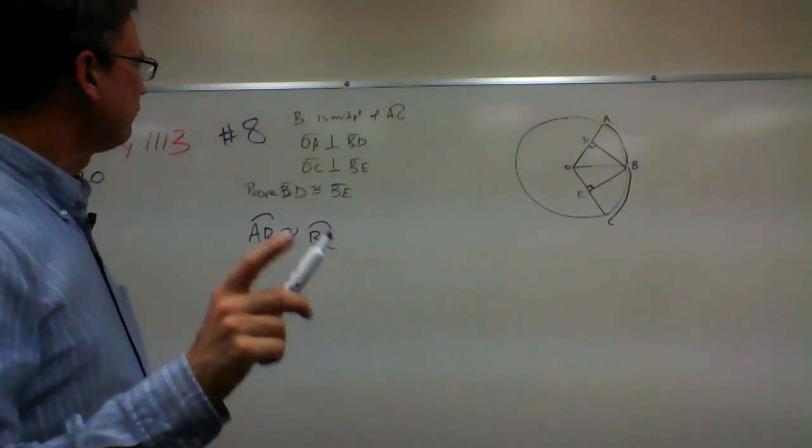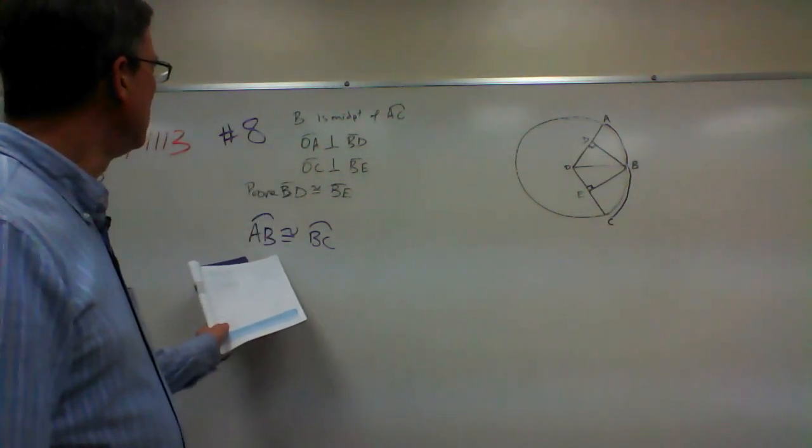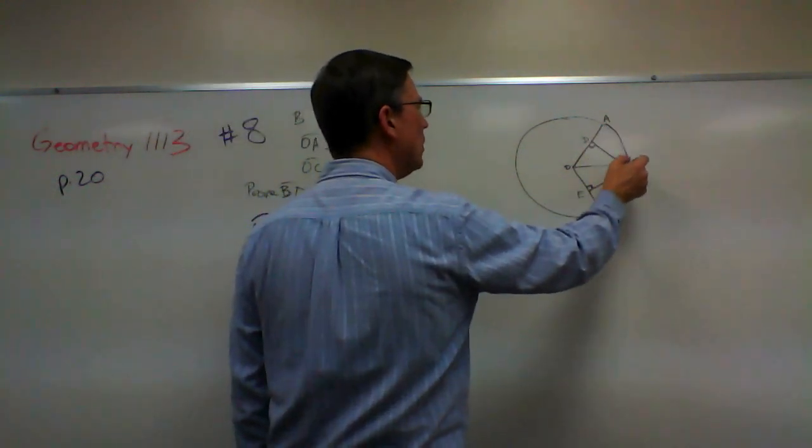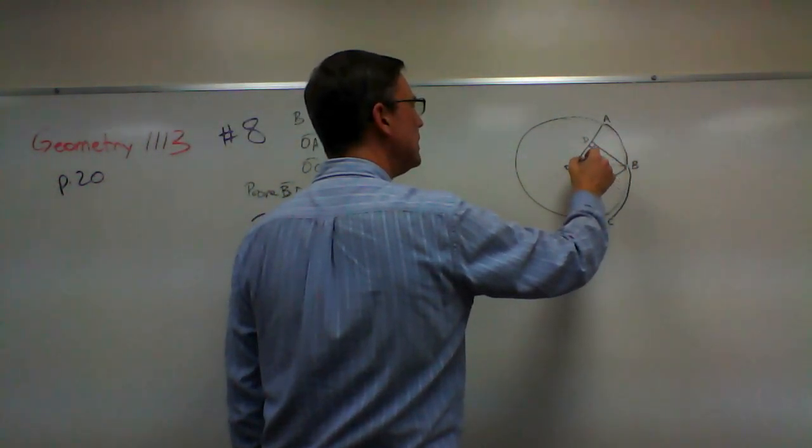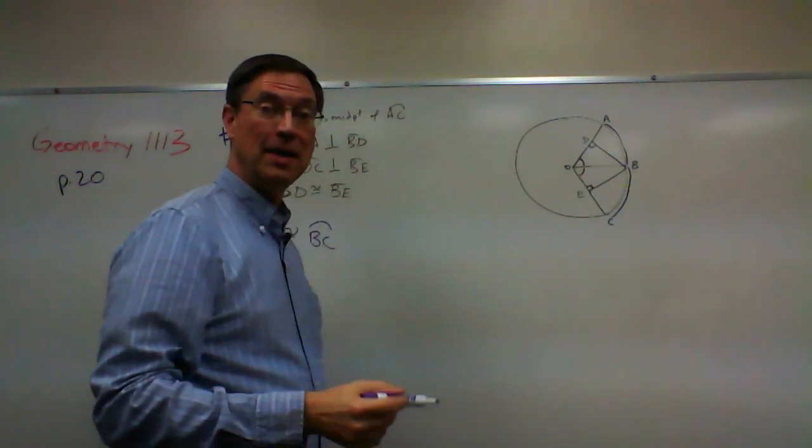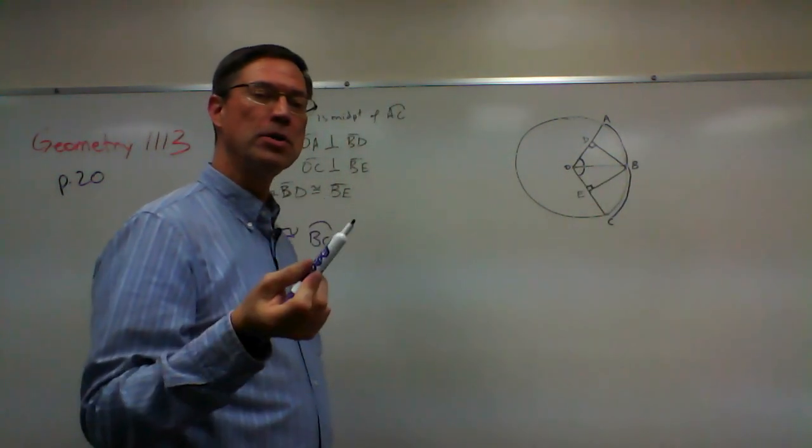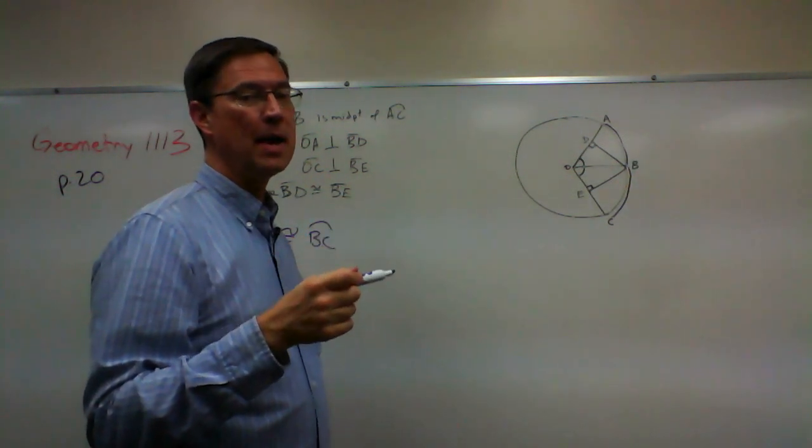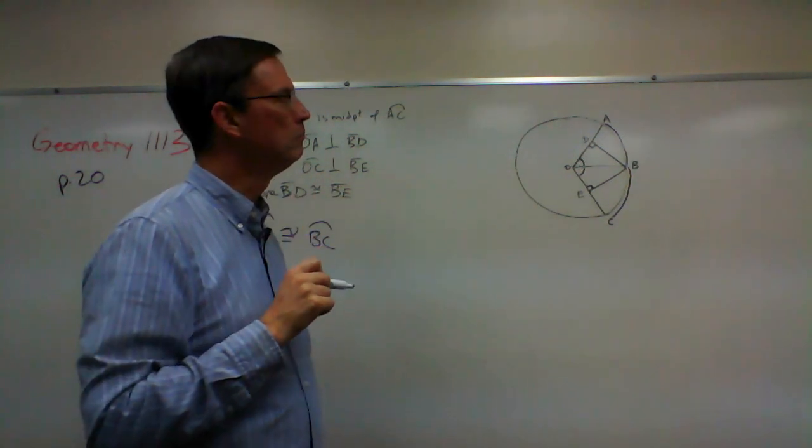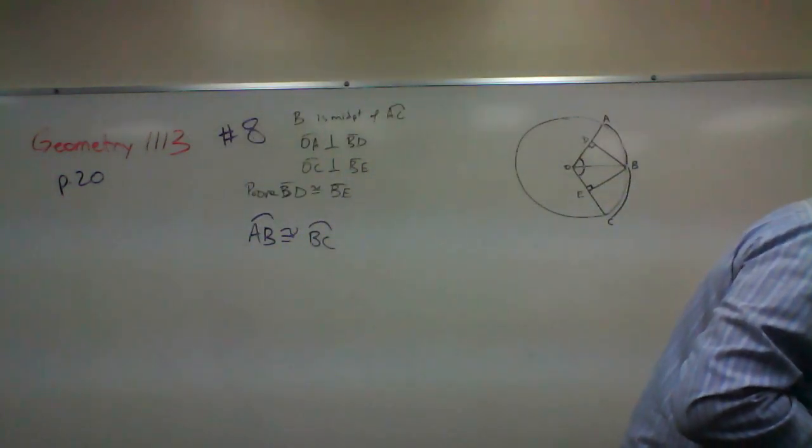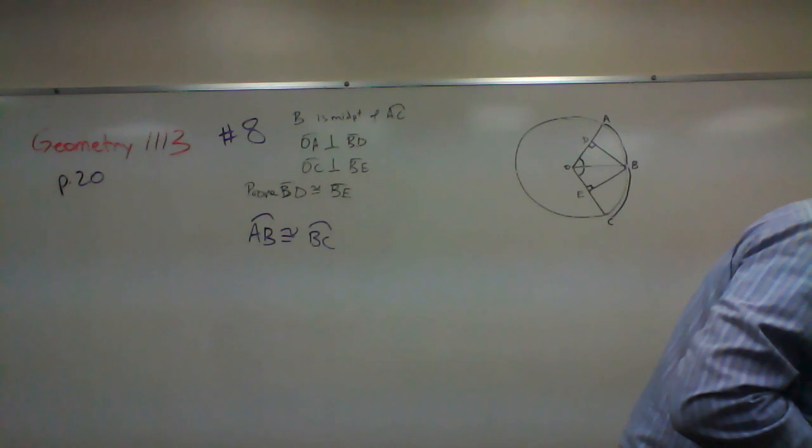Oh wait, before we do that. Once we know that these two are congruent, what else do we know? If these arcs are congruent, what does that tell me about this angle and this angle? If the arcs are congruent, can we say that their central angles are congruent? I think there is a theorem about that. Theorem 46.